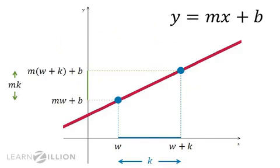That means that the difference in heights is mk. Notice in particular that that difference mk does not involve w. It depends only on m, the slope of the line, and k, the length of the interval. Therefore we can conclude that any time we have a slope of m and an interval length of k, the difference in the y coordinates will be mk, regardless of what w is.